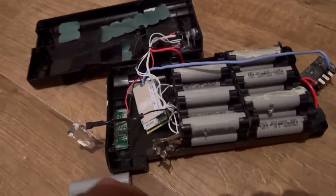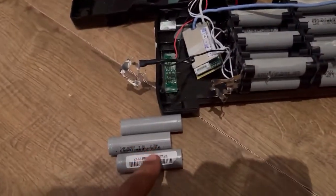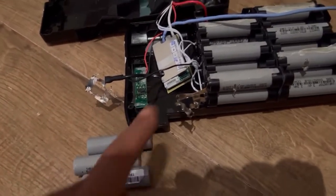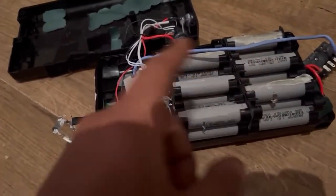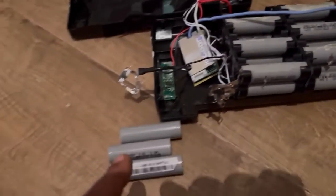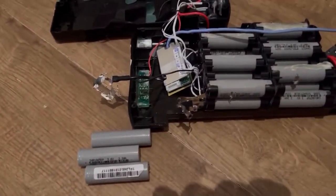It's a 24 volt 7ah, a 3p 7s configuration - so we've got 7 cells in series and 3 in parallel.